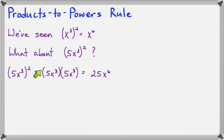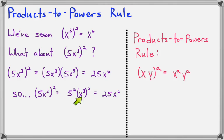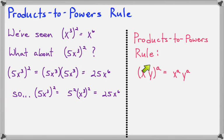So we can figure out the answer without knowing the products to powers rule. But now that we see the answer, 25 is actually 5 squared, and x to the sixth is actually x to the third squared. It looks like the square gets applied to each factor inside the parentheses — we squared the 5, we squared x to the third. So from now on, we'll apply the exponent to each factor: xy raised to the a power would be x to the a times y to the a. Each factor inside the parentheses gets its own copy of the exponent.